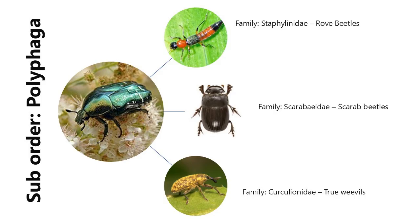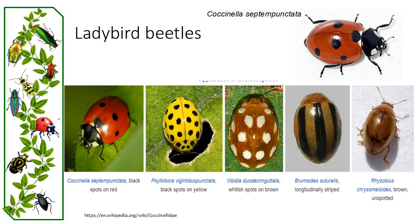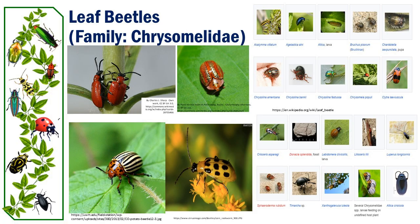Suborder Polyphaga is by far the largest and most diverse group of beetles, and 90% of all described species are placed here. It includes a vast array of families, from leaf beetles to weevils, ladybird beetles and others. These beetles exhibit a wide range of feeding habits including being herbivores, fungivores, predators and scavengers. They also occupy a variety of ecological niches across terrestrial and aquatic habitats.